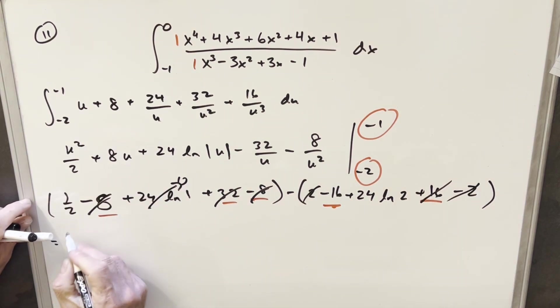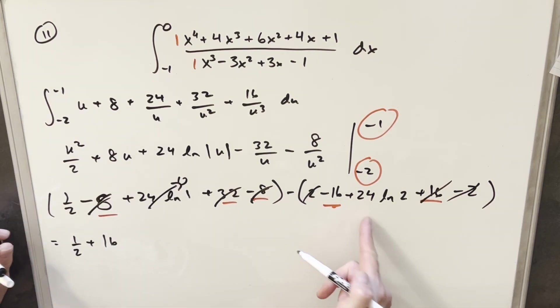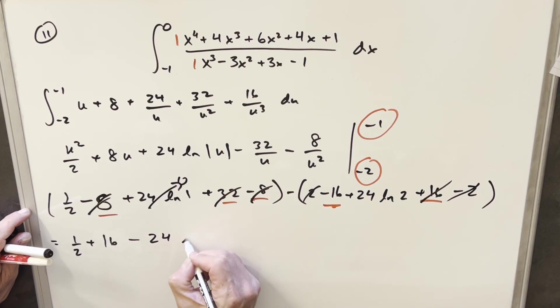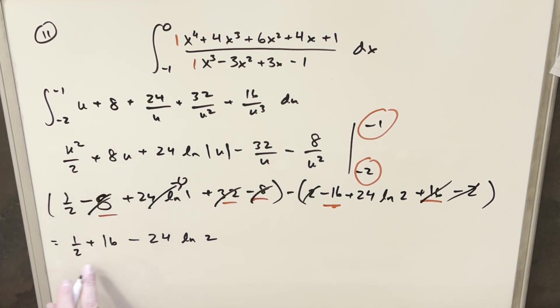So let's see what I have left. We have our 1 half here. Here I'm going to have a minus times minus plus 16. And then from right here, I'm going to have a minus 24 natural log of 2. But I can combine the 16 and 1 half. And I'm going to write that as 33 over 2 minus 24 natural log of 2. And that's it.